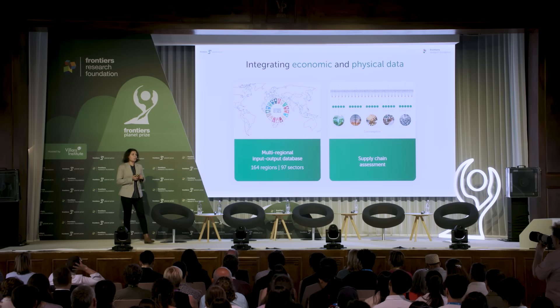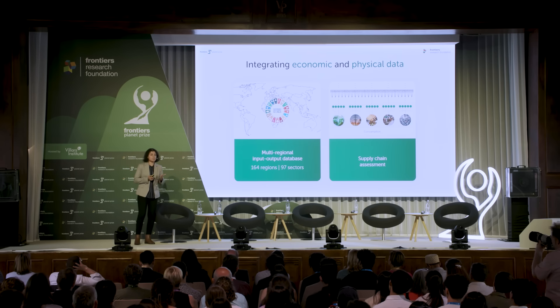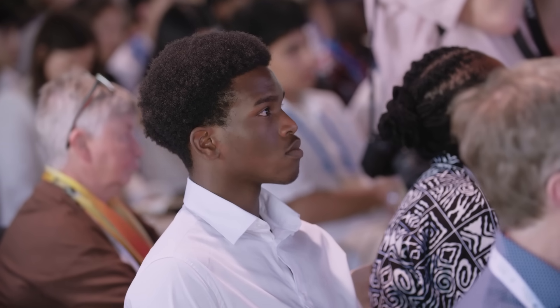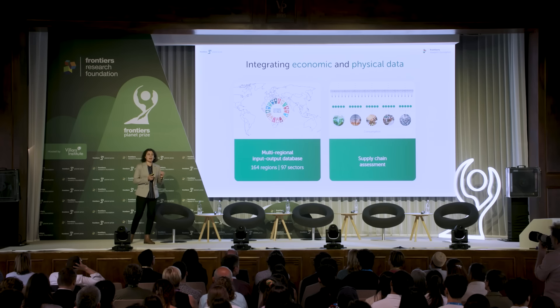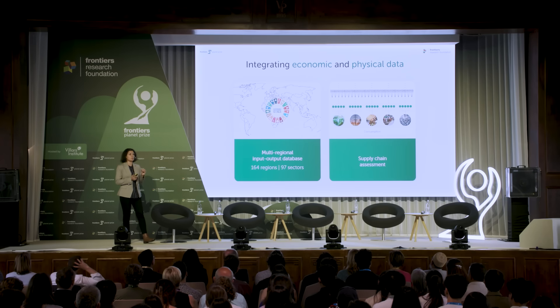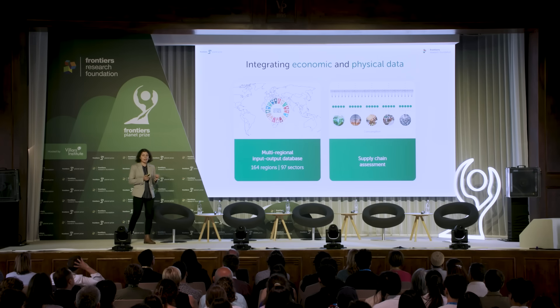We integrated that data with the 12 SDG-relevant consumption-based proxies and ran a consumption-based assessment using high-performance computers at the University of Sydney. We analyzed billions of supply chain networks to connect producers with consumers via intermediate trade routes and to see exactly where impacts are taking place — in terms of emissions, biodiversity threats, land use, water use, and other social indicators.